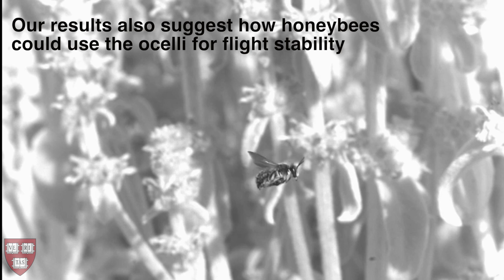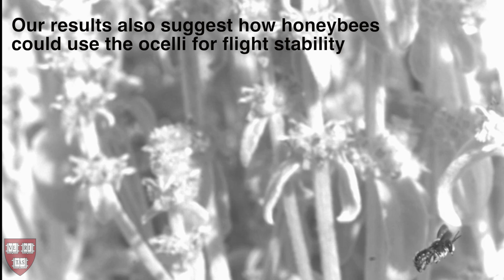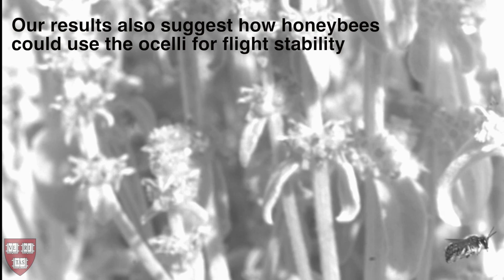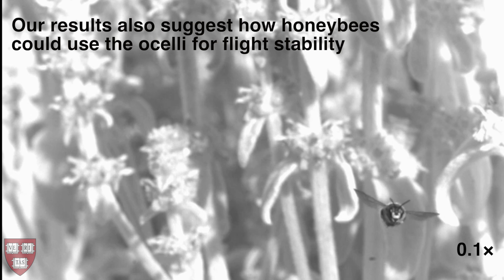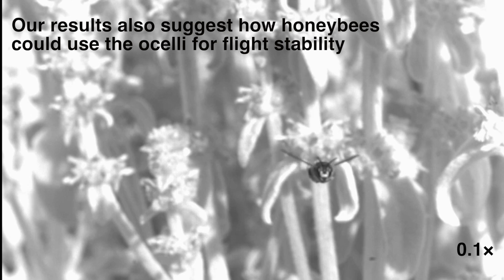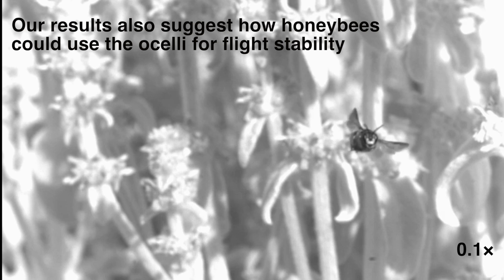Because the robotic fly is similar to flying insects, it can also be used to test hypotheses about biological flight control. Our results suggest how flying insects without gyroscopic organs, such as honeybees and bumblebees, could instead use the ocelli to stabilize their flight.